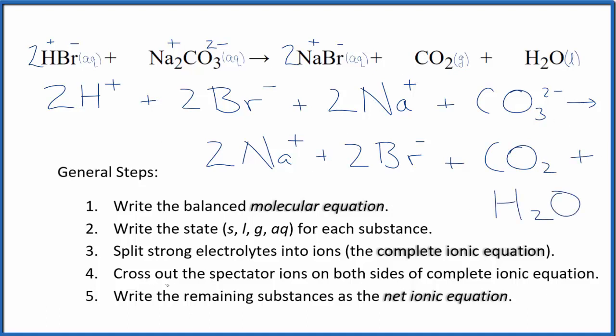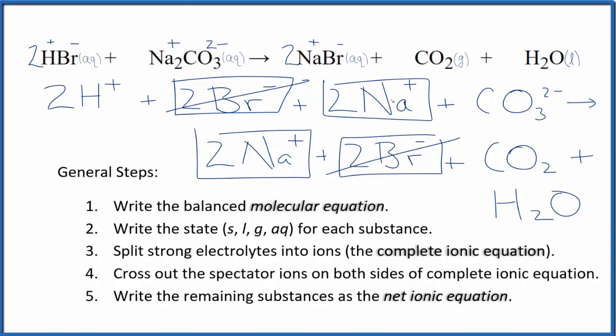Now we can cross out the spectator ions. They appear on both sides of the complete ionic equation. So as we look across here in the reactants at the top, and then here are the products down here, we have two bromide ions in the reactants. We also have two bromide ions in the products. We can cross those out. Those are spectator ions. Two sodium ions here in the reactants, again, in the products, two sodium ions. Cross them out. That's it.